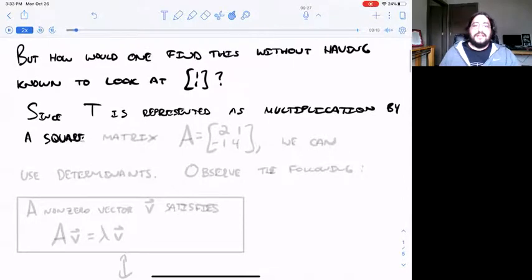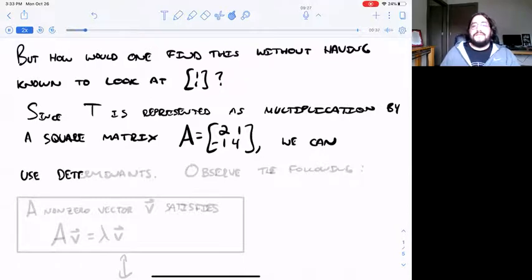If you were just handed that linear transformation, this particular one represented by multiplication by the square matrix, what could you do to find that eigenvector from scratch?